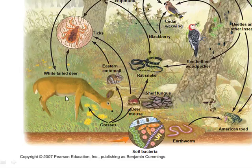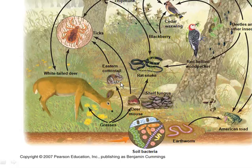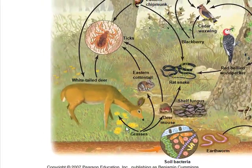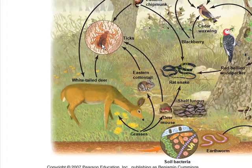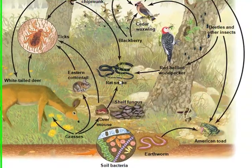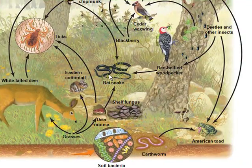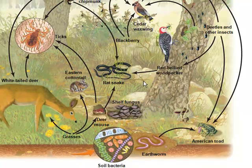We can see examples of primary consumers, like a deer eating grass, and the eastern cottontail is also a primary consumer. Examples of secondary consumers include ticks and the rattlesnake. You can look for a tertiary consumer in this food web as well.